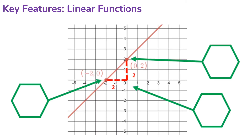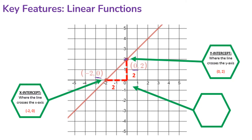Now let's take a look at the graph of a linear function, which is a line. The x-intercept is where the graph crosses the x-axis — here at the ordered pair (−2, 0), so your y-value is zero. The y-intercept is where the graph crosses the y-axis, so your x-value is zero. For the slope, pick two points on the graph and count: rising two and running two gives a slope of one. You can also count right and up and get the same result.